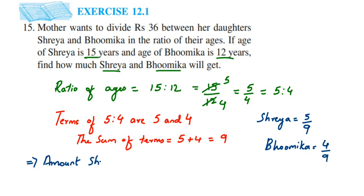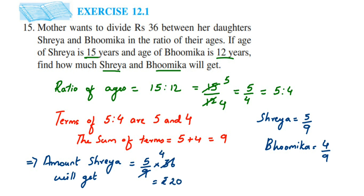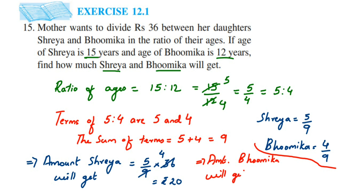Amount Shreya will get equals 5/9 of the total amount, which is rupees 36. So 5/9 of 36 — cancelling: 9 fours are 36, so 5 into 4 equals 20. Shreya gets rupees 20. Amount Bhumika will get equals 4/9 of 36 — cancelling gives 4 fours are 16. So Bhumika gets rupees 16.